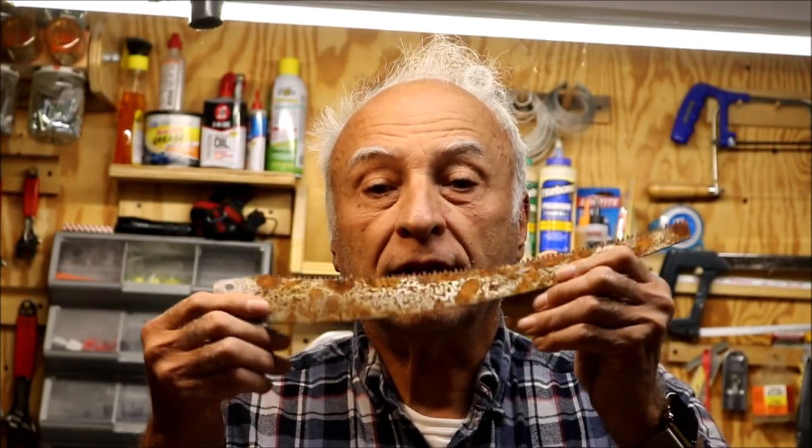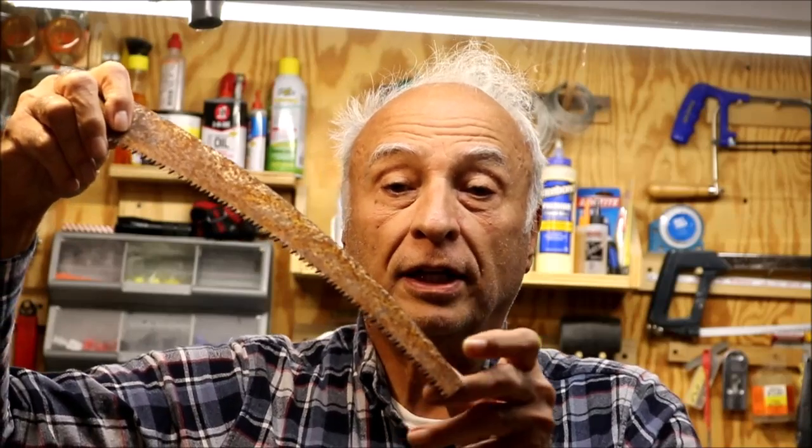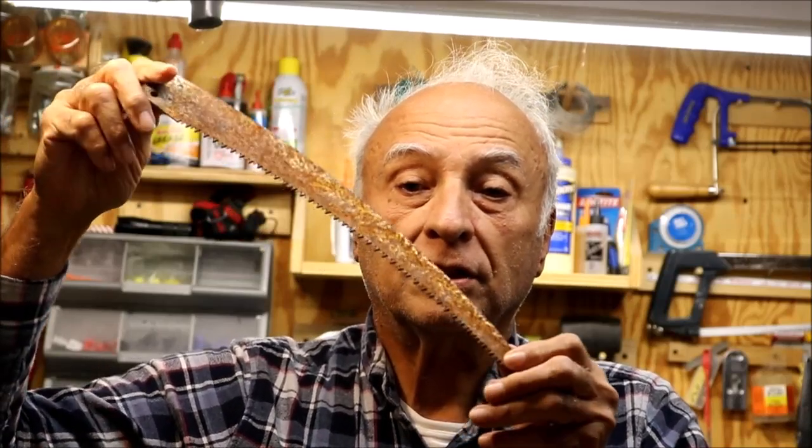So first we're going to set things up and I'm going to try to get the rust off of this. This is a tree saw that I left out in the woods and I couldn't find it and I recently found it and it's been out there for about a year. As you can see it's got a lot of rust on it. So I'm going to try to use some electrolysis on this.